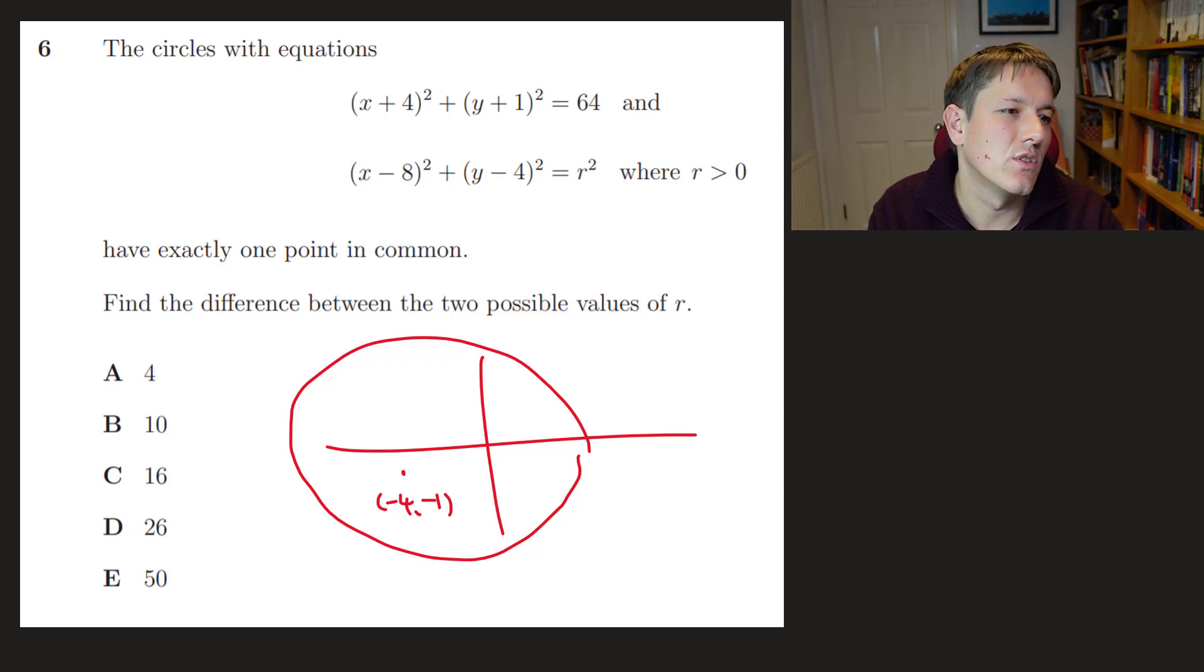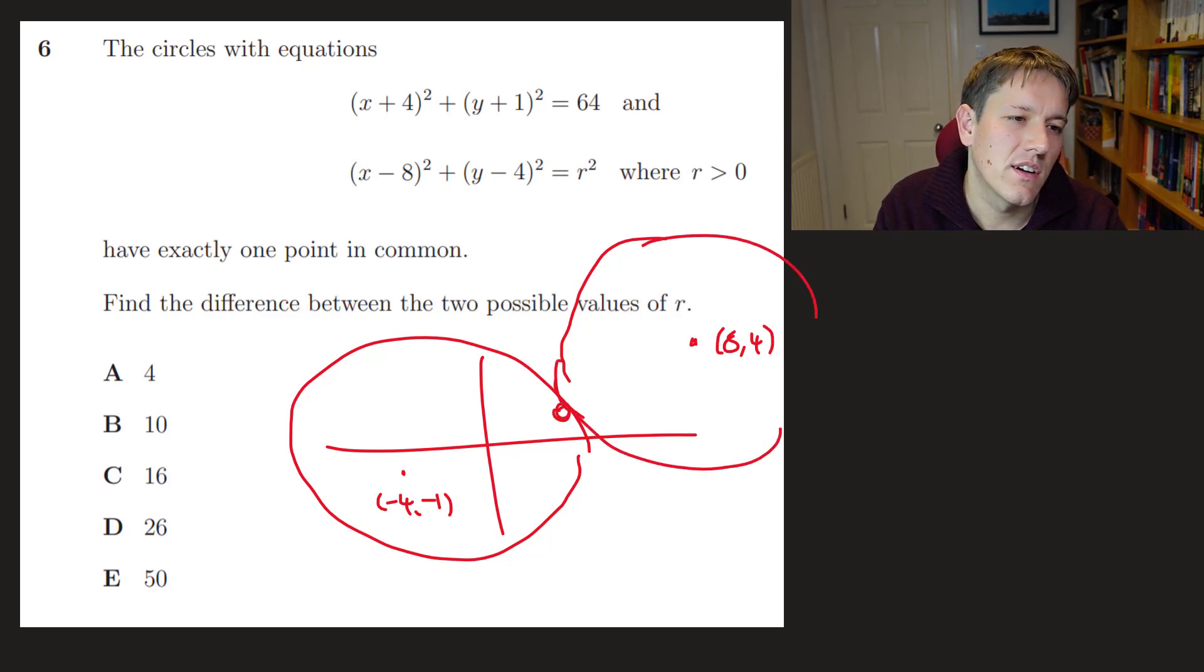So actually, if this is at minus 4 with radius 8, I guess, well, 4, so x equals 8 is still going to be way over here. So it's going to be like somewhere up here. Now, the question is, if it's got one point in common with this circle, well, OK, so the most obvious option is that there's a circle that sort of looks a bit like this and it just touches here, right?